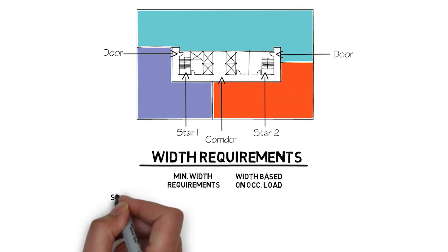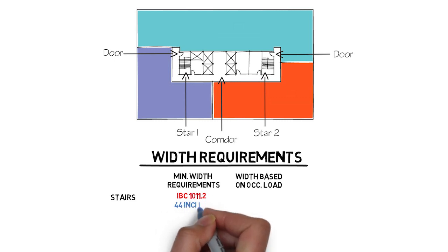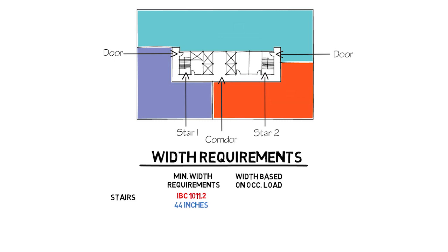Let's start with stairs. First let's look at the minimums required, which can be found in IBC section 1011.2, which notes that the widths must be a minimum of 44 inches. Now let's check the minimum required width based on occupancy load. To provide the answer you will first need the total occupant load for the floor. My last video explains the basics of calculating the width for a suite — a link to that video will be posted at the end of this video and also in the description below.